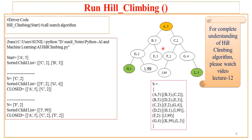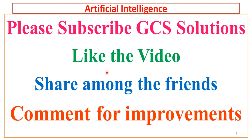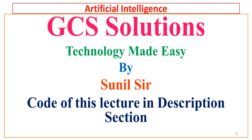The basic problem with this hill climbing approach is that it is blindfolded — it tends toward minimization but gets stuck in a local minimum. The better path would have been A5 → B3 → D2 → H1. For better understanding, watch video lecture 12 of this series. Hope you understood this. Dear learners, please subscribe to GCS Solutions if you haven't yet, like the video, share it with friends, and comment for improvements. We are GCS Solutions, making technology easy to learn. Till the next lecture, be intelligent.